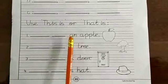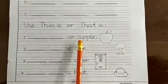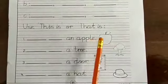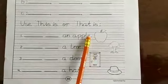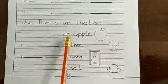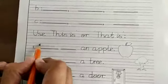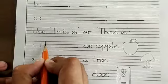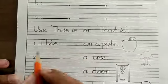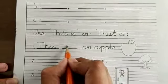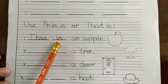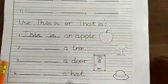Dash dash an apple. Is this apple near? Yes, it's near. So what are we going to write? This is an apple. Write: capital T, H, I, S — this. In the next blank write down I, S — is. This is an apple. Come to the second sentence.